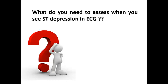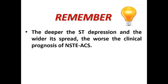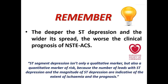When we see ST depression on an ECG, we need to assess: the magnitude in millimeters, the distribution — number of leads showing it and which leads — the morphology, and whether there is any ST elevation in other leads. This is similar to assessing ST segment elevation. Searching for ST elevation is important because ST depression sometimes occurs as reciprocal changes to opposing ST elevation. Remember: the deeper the ST depression and the wider its spread, the worse the clinical prognosis of non-ST elevation acute coronary syndrome.